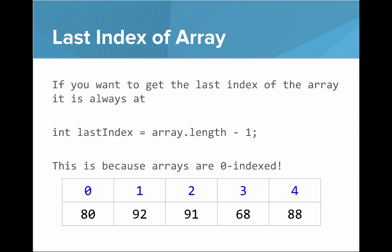So here's a trick: a convenient way to get the last index of the array. It's always last index equals array.length minus one, because arrays are zero indexed.